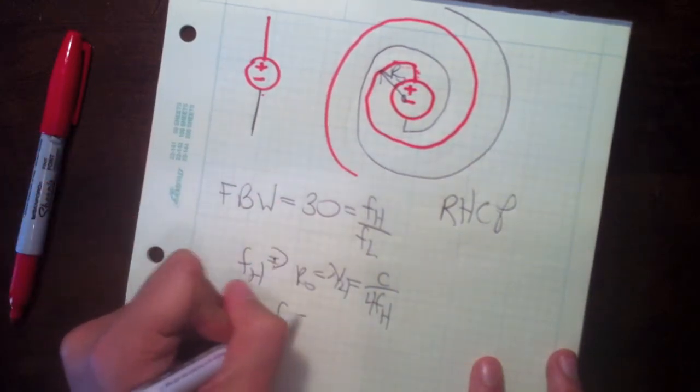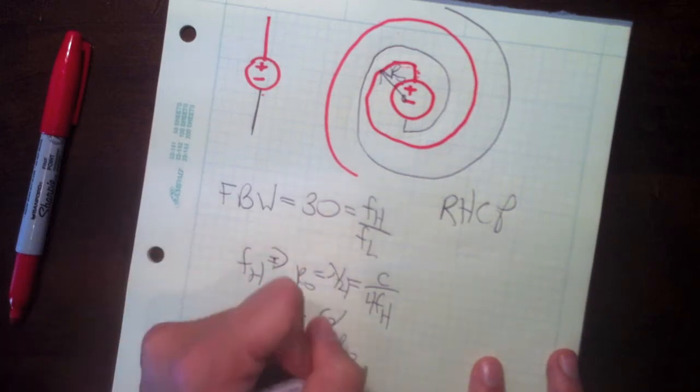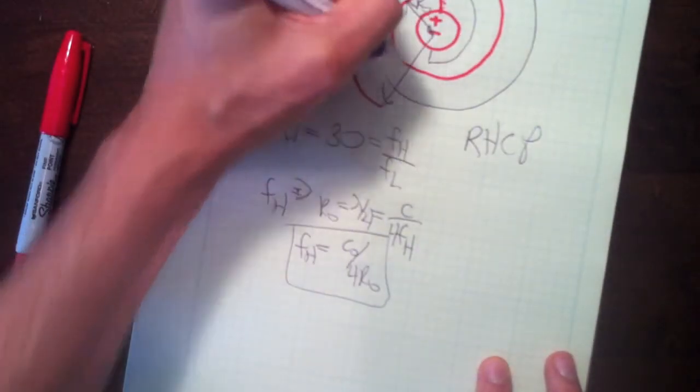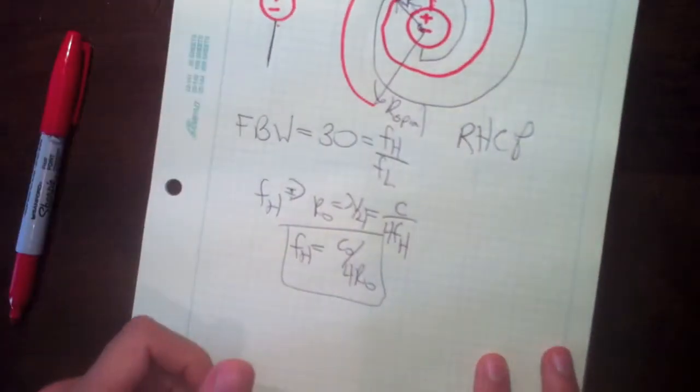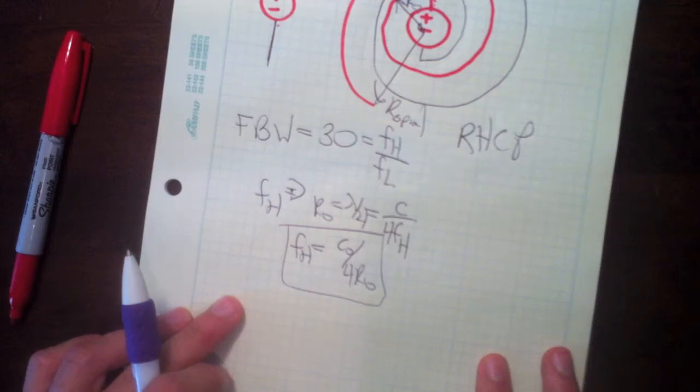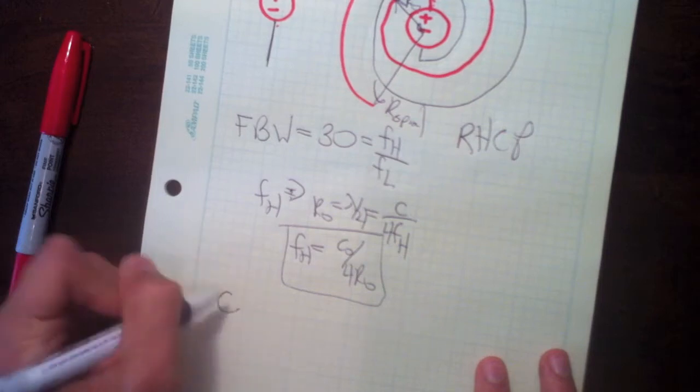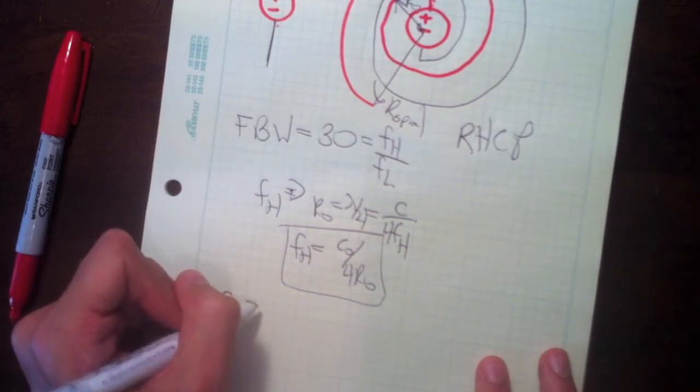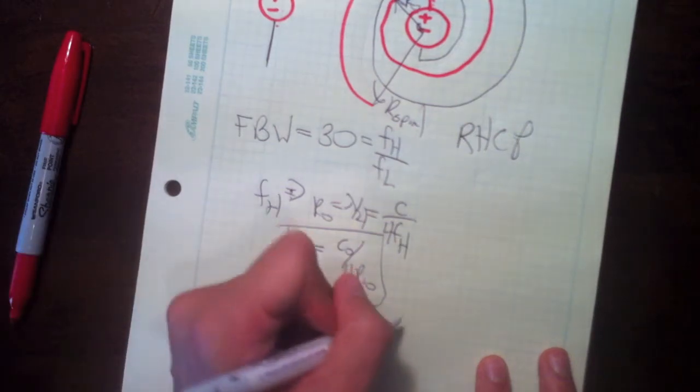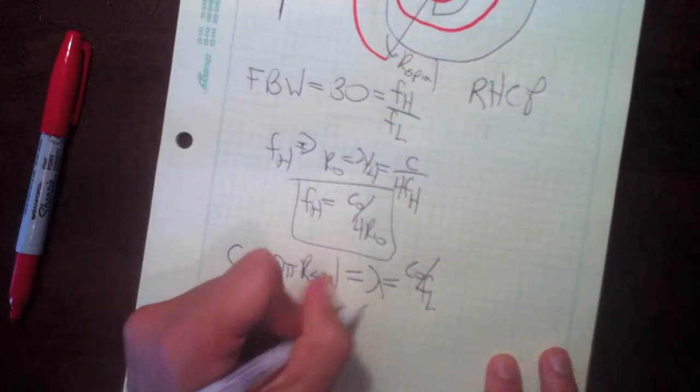Similarly, we can find the outer radius, which is called R spiral, determines the lowest frequency. It turns out that when the circumference of a spiral is equal to one wavelength, that will determine the lowest wavelength. Here we have the circumference, C, is 2 pi R spiral, and that should equal lambda, which should equal C0, the speed of light, over the lowest frequency. We can solve it and get the lowest frequency, C0, the speed of light, over 2 pi outer radius of the spiral. This determines the lower and upper frequency.